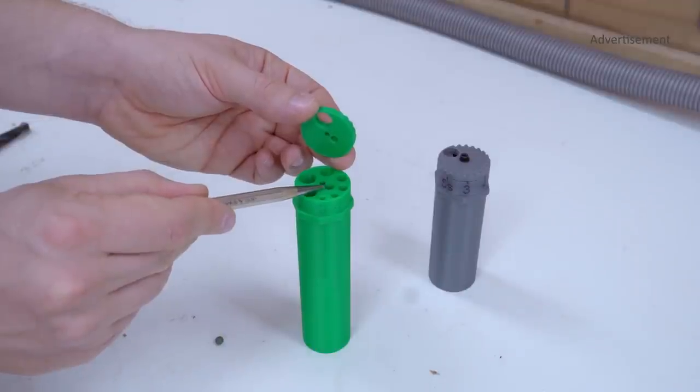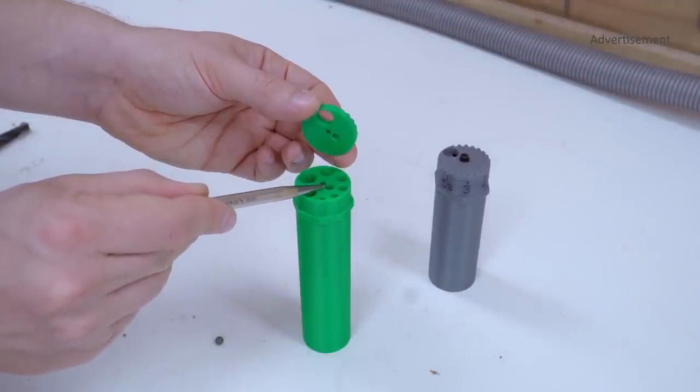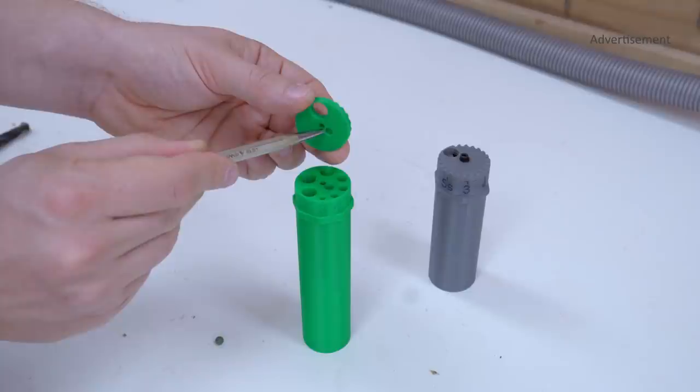Here you can see how the BB in this hole will snap into that hole in the lid and keep it from rotating.